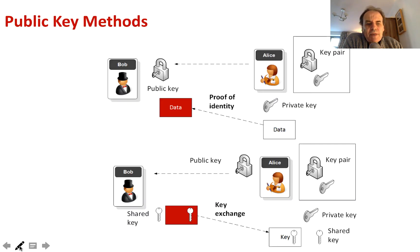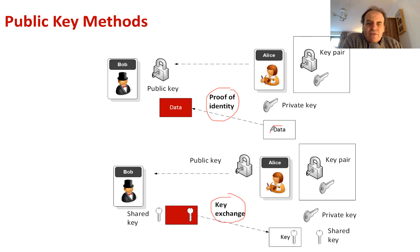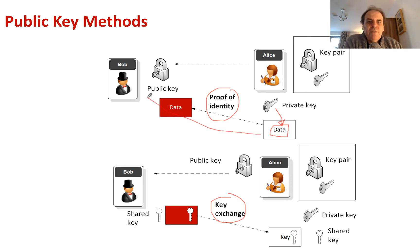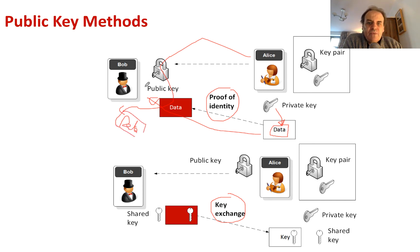The two main applications for public key are to prove the identity of something and to perform a key exchange. With proof of identity, Alice takes some data and encrypts that data with her private key. She sends it over to Bob. Bob then takes her public key and decrypts the data, and if the data matches what Alice sent, she has proven her identity.